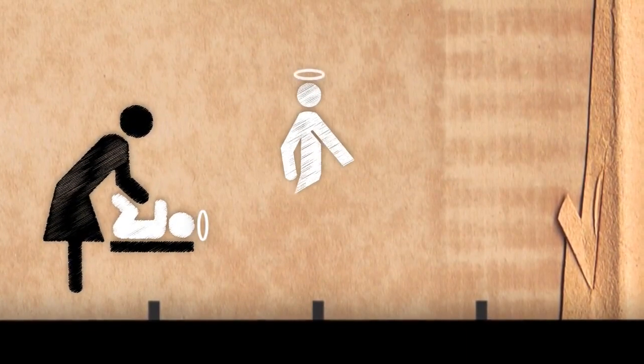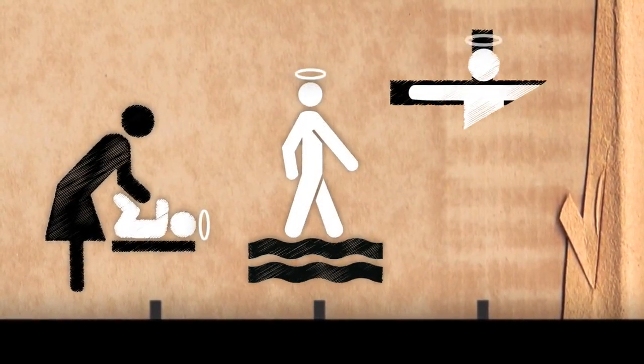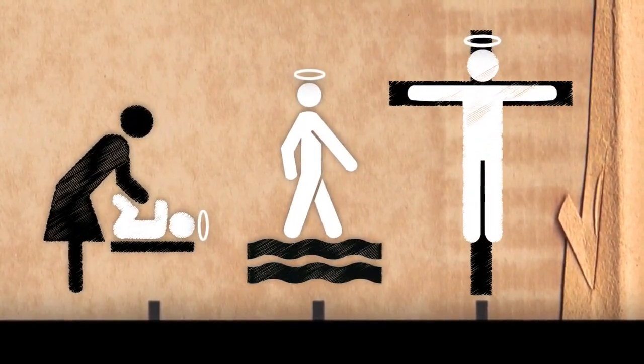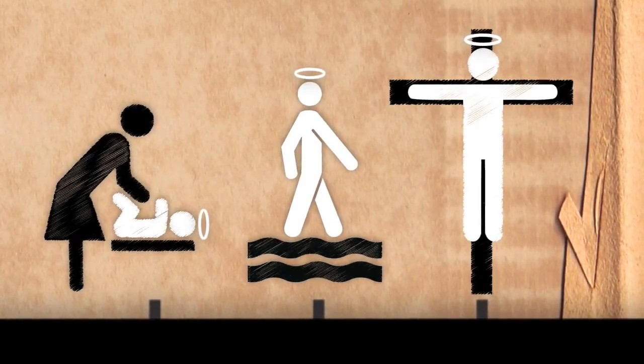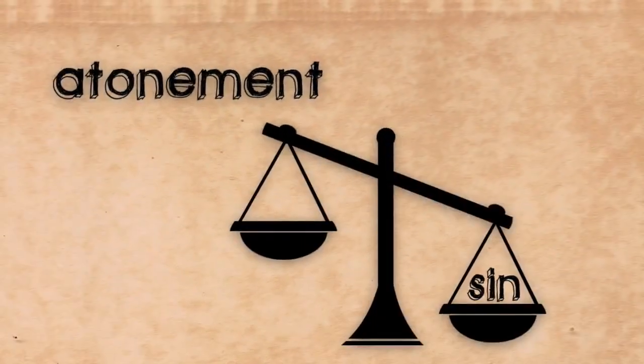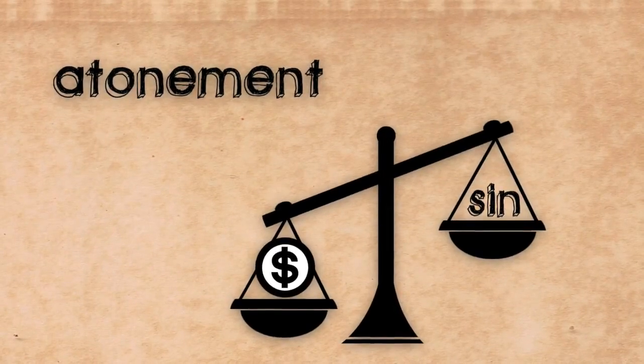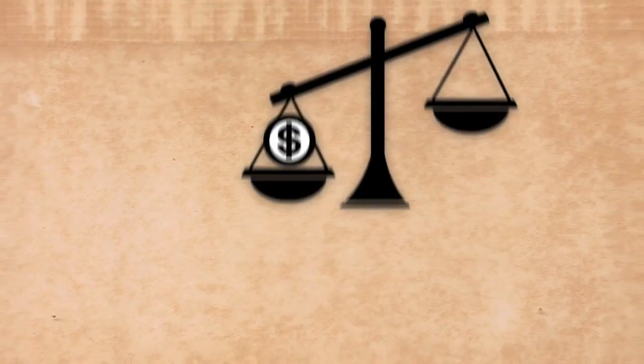According to the New Testament, Jesus is born to a virgin named Mary, lives a sinless life, and then willingly sacrifices himself as the substitutionary atonement for the sins of mankind. The word atonement is used to describe an act that pays for or erases one's sins and transgressions.